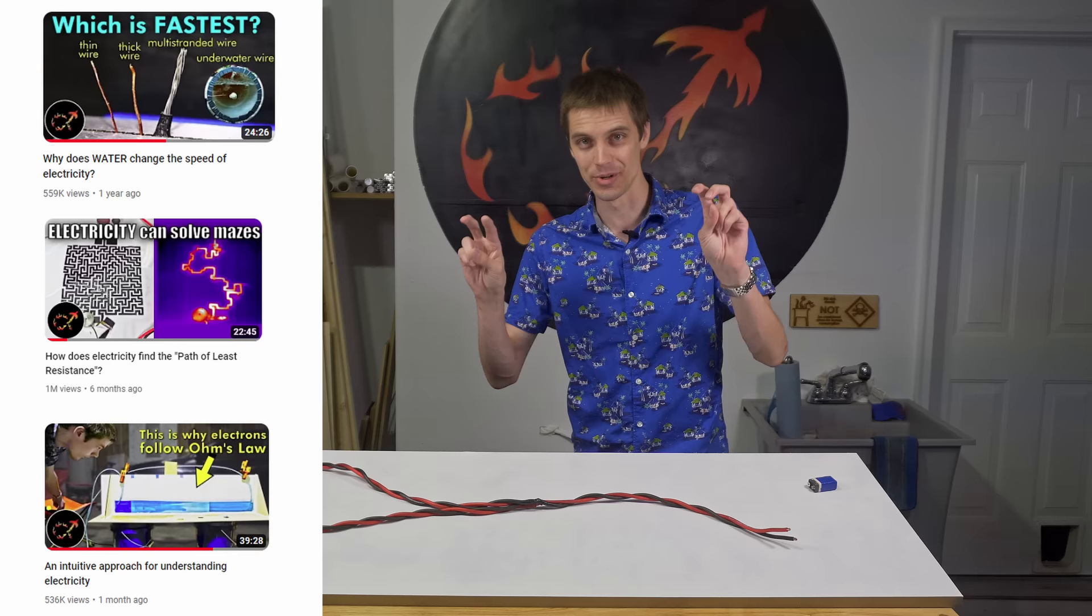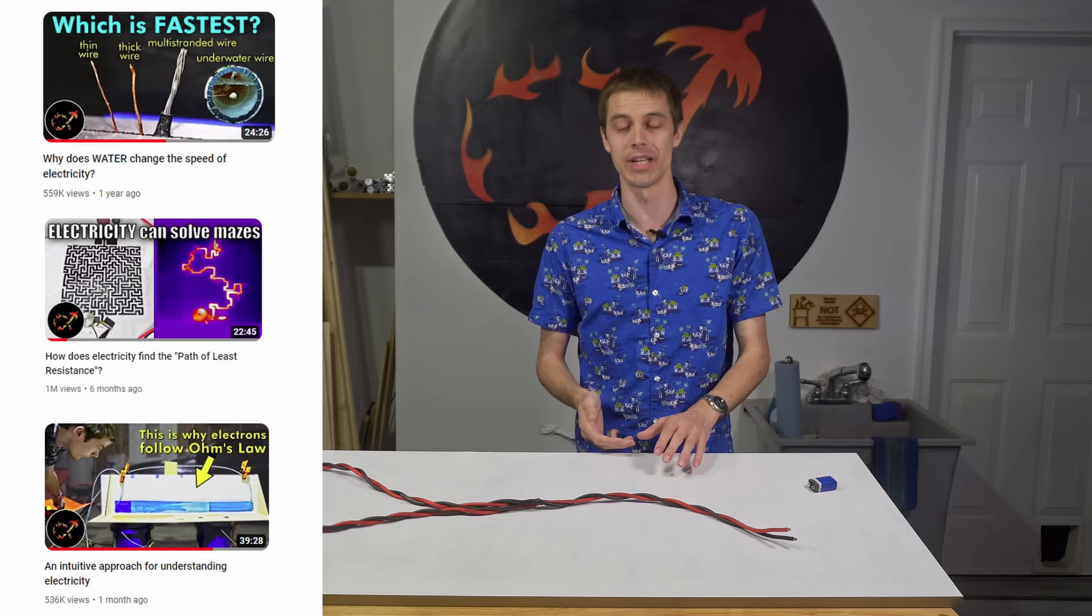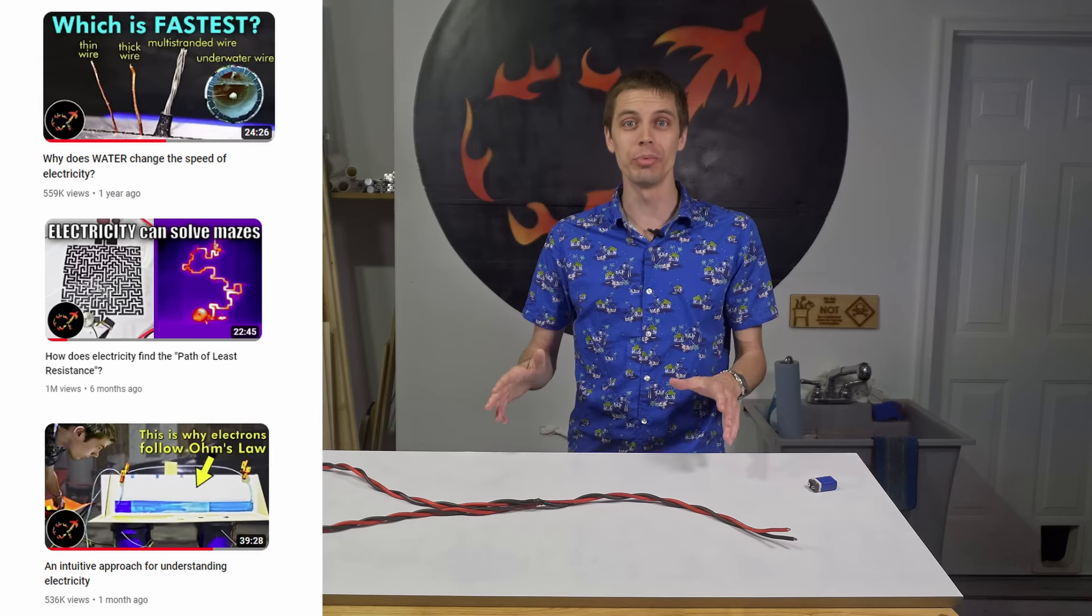A second one, where I show that electricity prefers to flow through connected wires and not disconnected wires to solve a maze. And a third one, where I try to provide an intuition for voltage, current, and resistance using a lot of different analogies, most notably a narrow trough of water. You don't need to have watched these videos to see this one, but if you want to learn more, they exist.